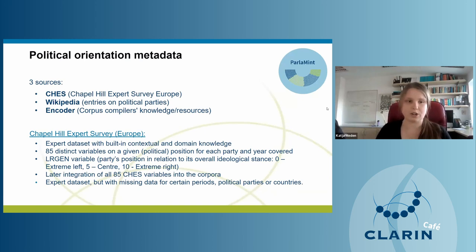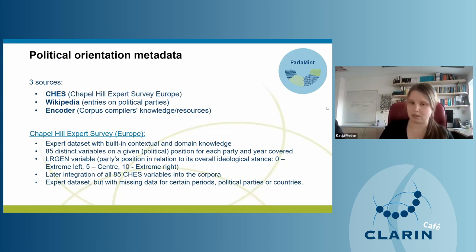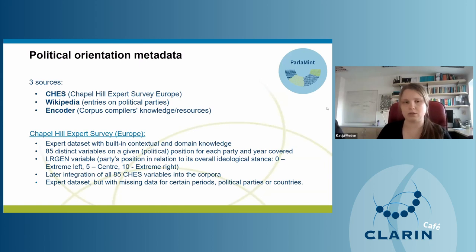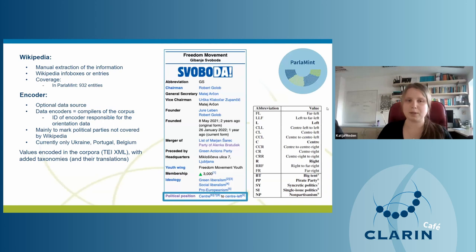For political orientation metadata we used three different sources. The first was the Chapel Hill Expert Survey (CHES) dataset, an expert dataset with built-in contextual domain knowledge provided by political scientists. It holds 85 distinct variables and a given political position for each party and year covered. We focused first on one specific variable indicating overall ideological stance, then later decided to integrate all 85 CHES variables. However, CHES has a lot of missing data — for certain periods, individual political bodies, and entire countries present in ParlaMint but not in CHES.